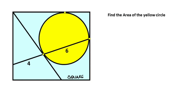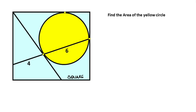Hello everyone. In this video we have one circle and one square. This side is given four and here is given six. These are given as tangent points, and the yellow circular area is asked.